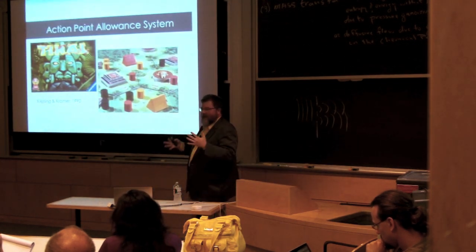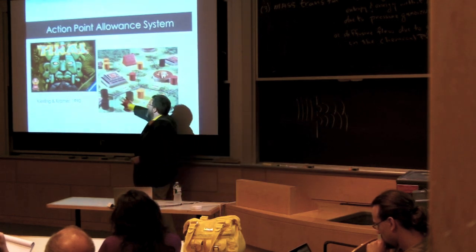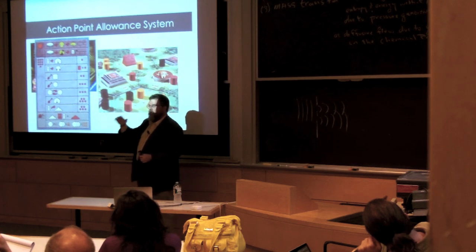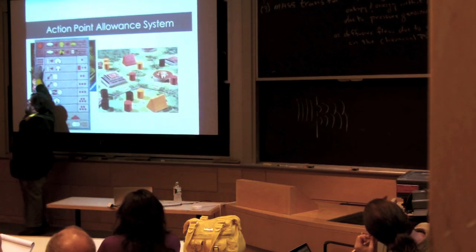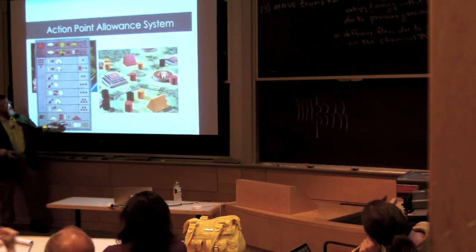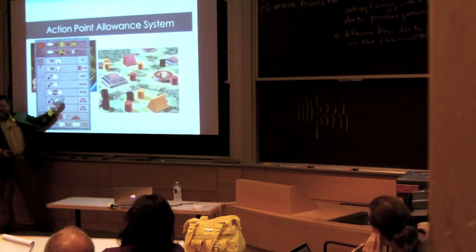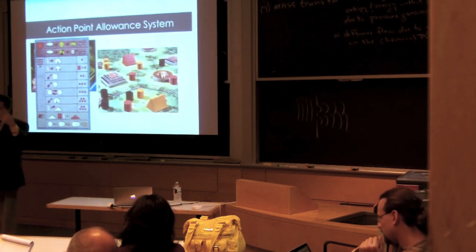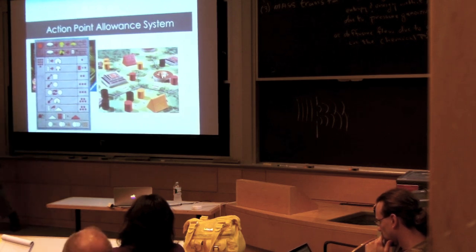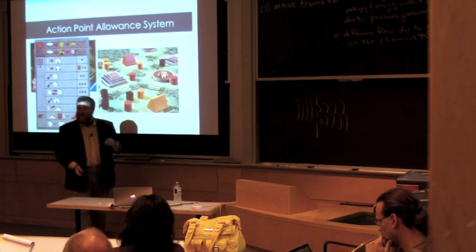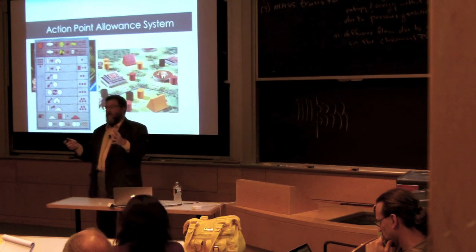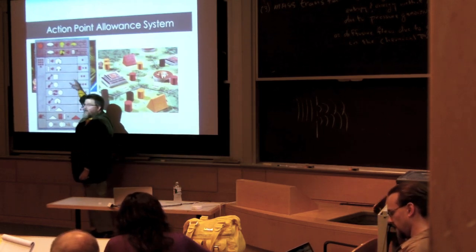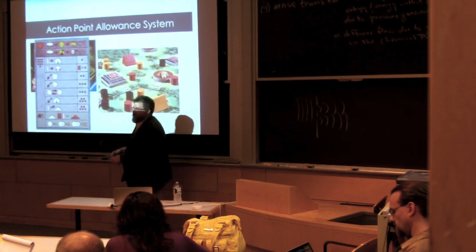Another way of choosing actions is the action point allowance system, used in the game Tikal where you're an explorer digging up pyramids and treasures. Rather than choose from a list, you have 10 action points per turn - different things like moving your piece or digging up a treasure cost different amounts of points. From a design perspective this lets you have actions of different power. The disadvantage is analysis paralysis - where you look at everything you can do and your mind locks up. With 10 points and many possible actions, there are a lot of permutations to consider.